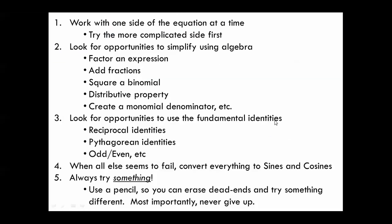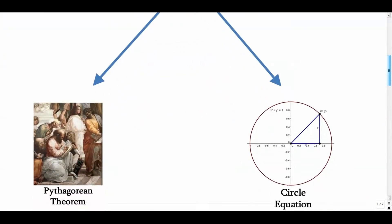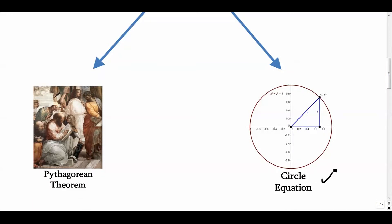Once we derive those, we'll make connections to a slide on verifying trig identities — some guidelines to follow — and then a slide with not just the Pythagorean identities but more that we can use as we verify. Consider this the precursor to the three-part identity series. To get these three identities there are basically two ways: the Pythagorean theorem and the circle equation. These aren't actually different, because the circle equation is itself a derivative of the Pythagorean theorem, but I'll show you both.